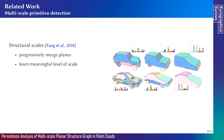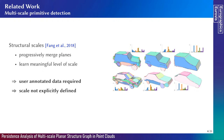There is one method by Fang and colleagues that is related to our problem. In this technique, they progressively merge planes obtained from an oversegmentation of the point cloud, then learn what is a pertinent configuration of planes and extract a set of them called structural scales. However, since it relies on machine learning, user-annotated data are required, which is usually not easy to get, and also the scale is not explicitly defined, as the result depends on the greedy sequence of merging operations.